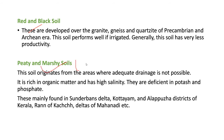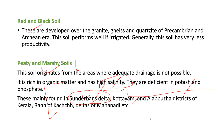Next, Peaty and Marshy Soils. This is a highly organic soil found in low-lying valleys. It has high salinity and high salt content. It is low in potassium and phosphate. Found in the Sundarbans Delta of West Bengal, Kottayam and Alappuzha districts of Kerala, Rann of Kutch, and deltas of Mahanadi. Kerala is known for its Kari soils, which are Peaty and Marshy soils.